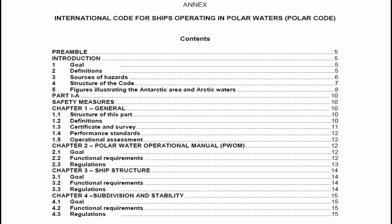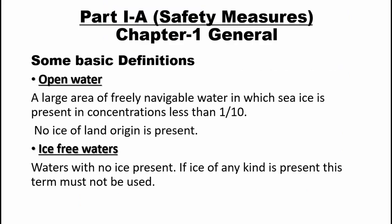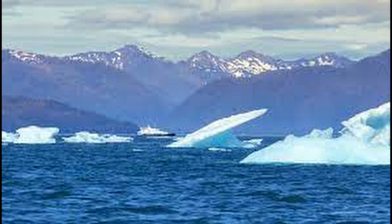Let us begin with Part 1A safety measures starting from Chapter 1 General. Let us look into some basic definitions which are necessary to understand the Polar Code the way the IMO is trying to tell us. Open water is a large area of freely navigable water in which less than 10% of sea ice can be present and no ice of land origin must be present in that sea area. Waters without any sea ice or land ice is known as ice-free waters.